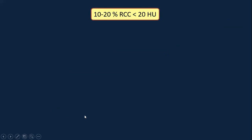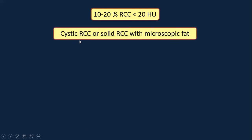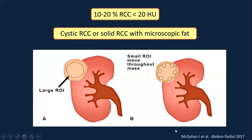Approximately 10 to 20% of renal cell cancers can measure less than 20 Hounsfield units on non-contrast CT — either because they are cystic, or because they are solid renal cell cancers with microscopic fat, which brings the Hounsfield unit density lower. Dr. McGann and his group compared placing a large region of interest over the entire tumor versus small regions of interest along the periphery. They found this technique may help identify solid renal masses that appear cystic.